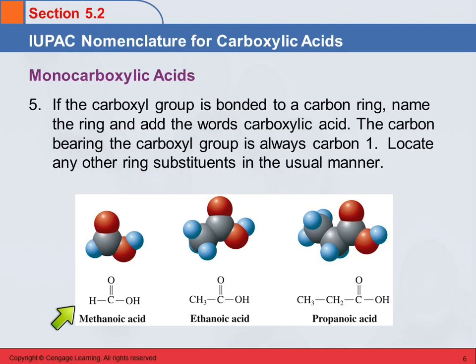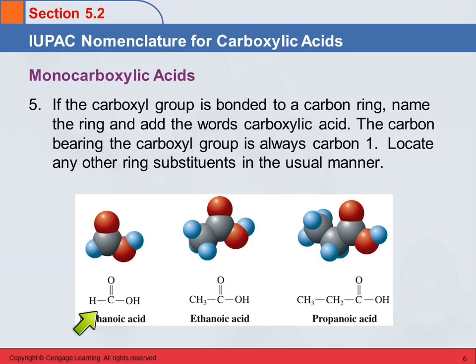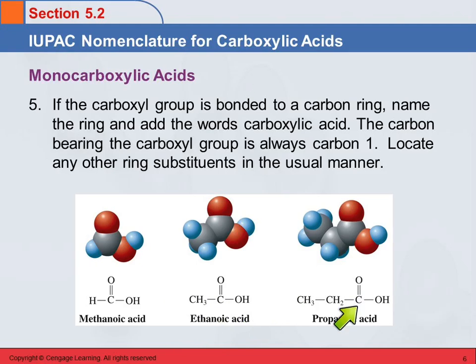Here are a couple of examples of some small carboxylic acids. This one has one carbon — the longest chain is just methane. We take methane, drop the E, and it becomes methanoic acid. This one has two carbons, based on ethane — it's ethanoic acid. This one has three: propane becomes propanoic acid. These are the IUPAC names for the carboxylic acids.